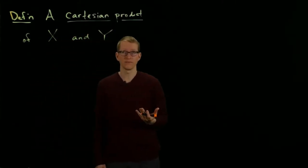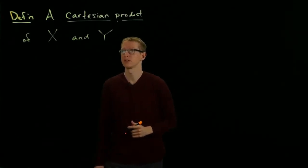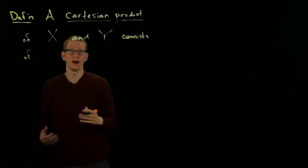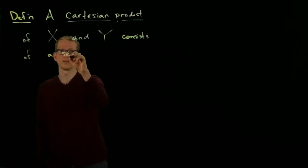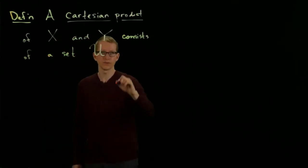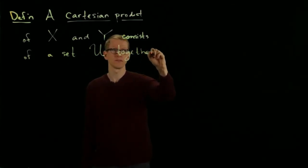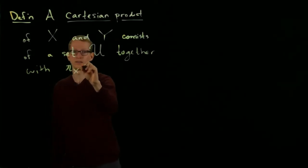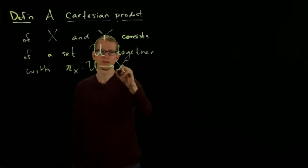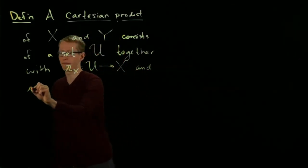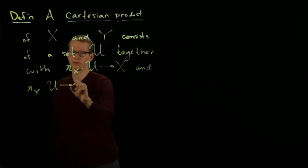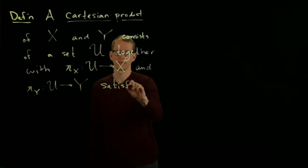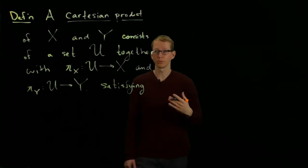This mathematical definition consists of data satisfying certain conditions. It consists of a set U together with two functions πX from U to X and πY from U to Y, satisfying a so-called universal property.